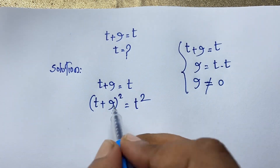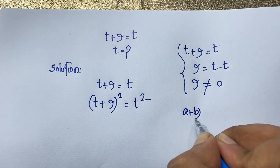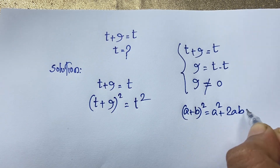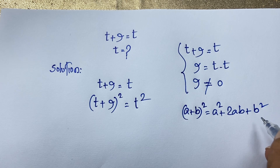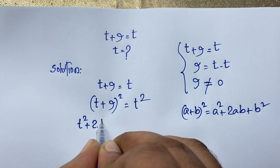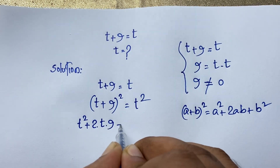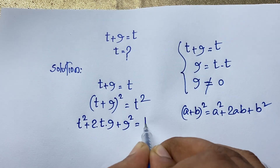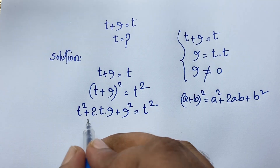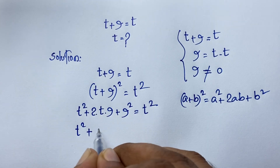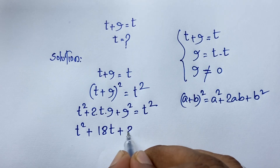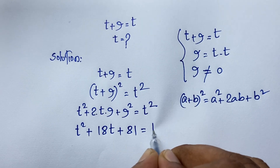Here I apply the (a + b)² formula: (a + b)² = a² + 2ab + b². Applying this formula, with a = t and b = 9: t² + 2·t·9 + 9² = t², which gives t² + 18t + 81 = t².